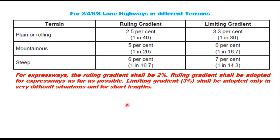The code suggests different gradients — ruling and limiting — for 2-lane, 4-lane, 6-lane, and 8-lane national highways in different terrain. For plane and rolling terrain, it can be 1 in 40 as the ruling gradient and 1 in 30 as the limiting gradient. For expressways, the ruling gradient shall be 2% and shall be adopted as far as possible. A limiting gradient of 3% can be adopted only in very difficult situations and for short lengths.